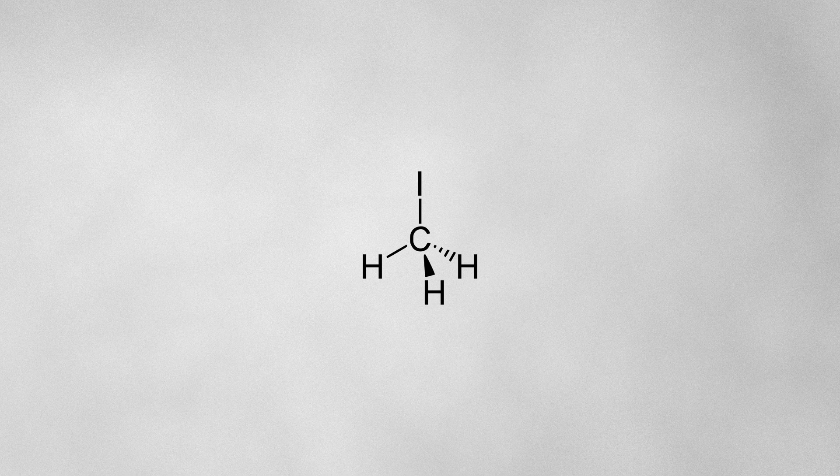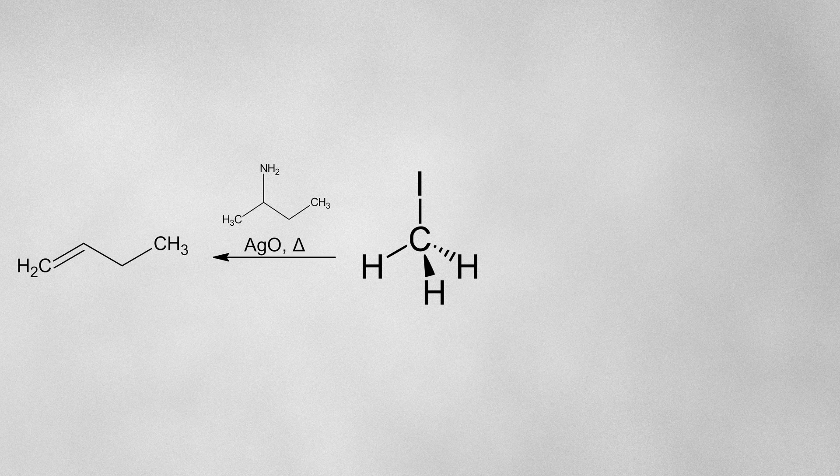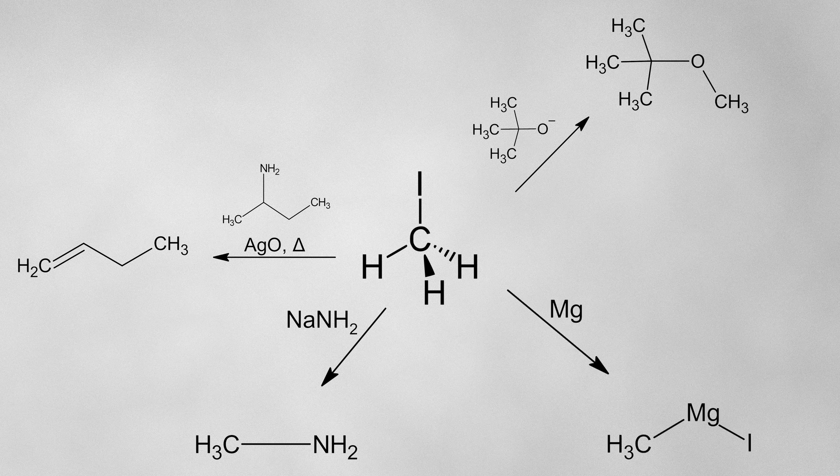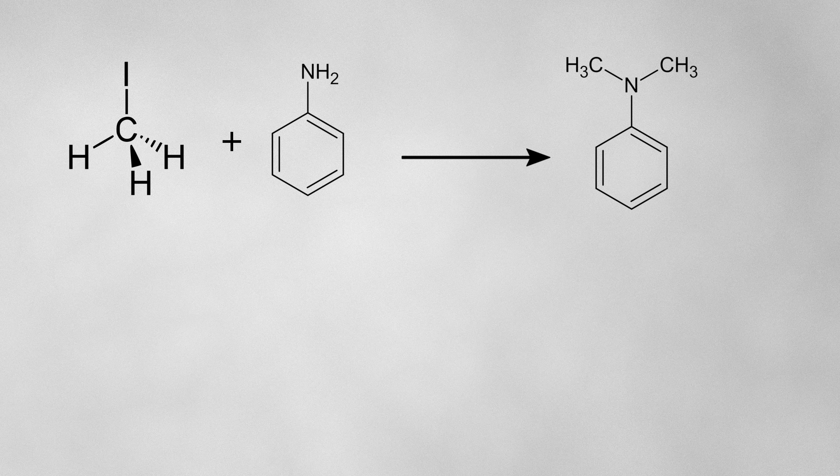Methyl iodide has a very wide range of uses. It is used in the Hoffman elimination of amines to form the lower substituted alkene product, but it finds its use in other reactions like ether syntheses, substitutions, or Grignard reactions. I will be needing it for the synthesis of N,N-dimethylaniline, which is a precursor needed to make methyl orange.